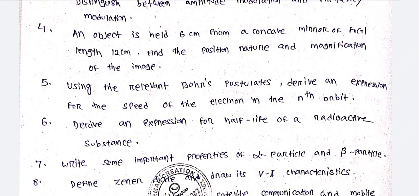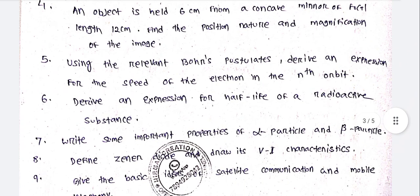Using the relevant Bohr's postulates, derive an expression for the speed of the electron in the nth orbit.